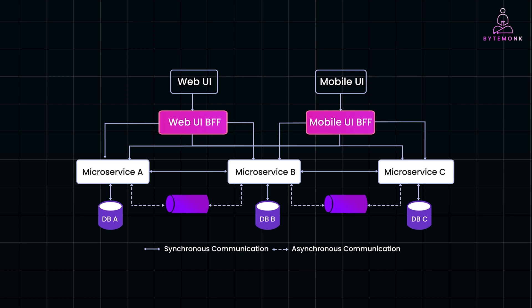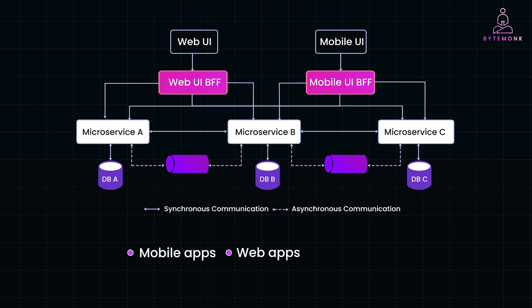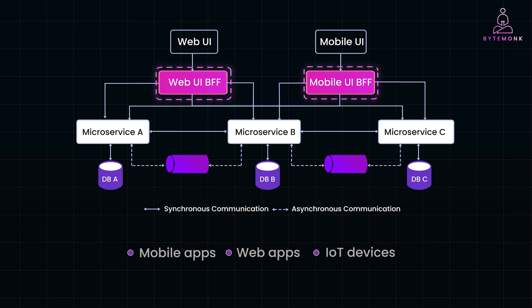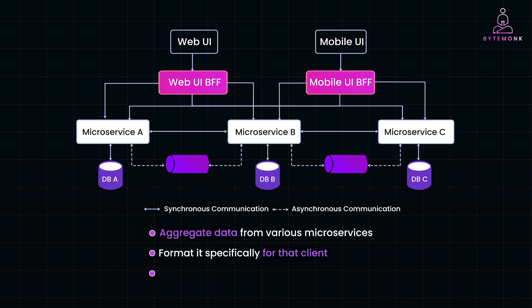Different types of clients often have distinct needs. Mobile apps may require lightweight data payloads to save on bandwidth and processing power. Web apps might need more detailed data or different formatting. And IoT devices could require minimal data transfer but high-frequency updates. With a BFF pattern, each client gets its own backend service, which can aggregate data from various microservices, format it specifically for that client, and handle specific business logic or workflows needed by that client. This makes front-end development much more straightforward, as front-end teams only need to interact with their dedicated BFF, which handles all the complexities of the backend.